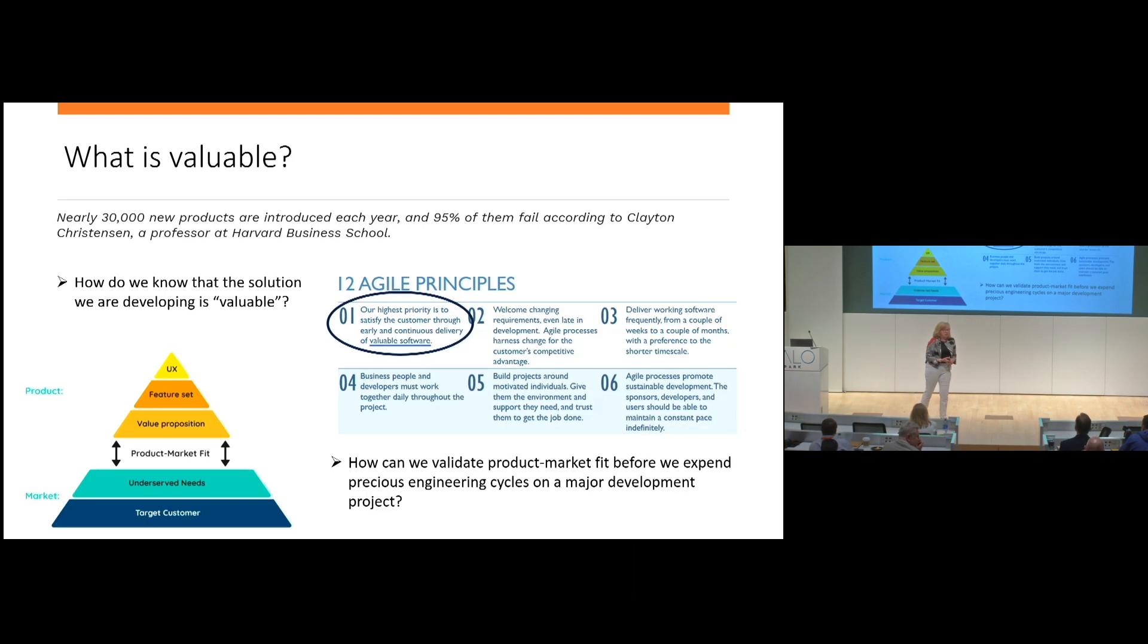Most companies today have turned into what Marty Kagan calls feature factories. He's a savant in the product management space who runs Silicon Valley Product Group. We're churning out features and thinking we're fulfilling our mission, but we're not. How do we validate that what we're developing actually meets the underserved needs of our target customers?